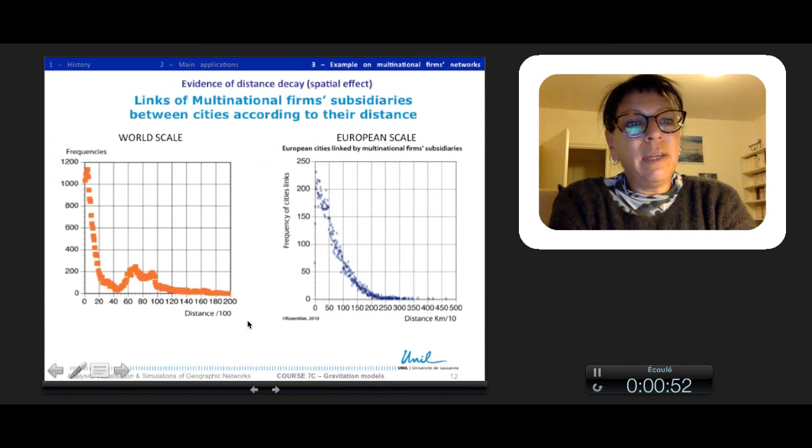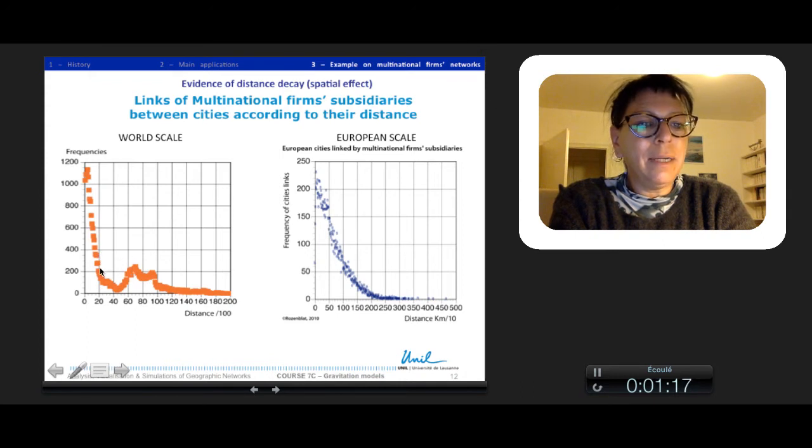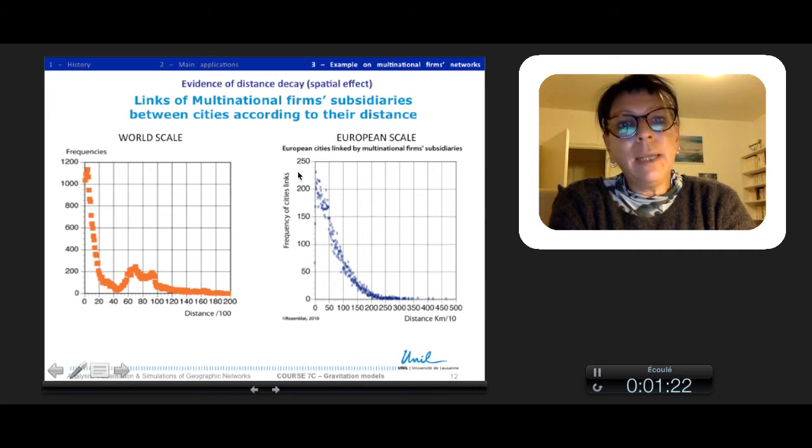But according to the observation of the frequency of linkages of cities according to their distance, we can see that there is a regular decrease, even if at the world scale it decreases then increases again because of intercontinental effect. Inside a continent like Europe, we can see a very regular decrease with distance.